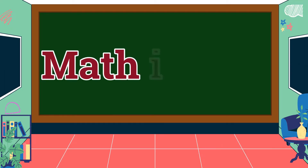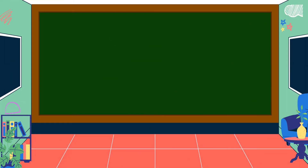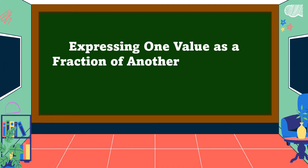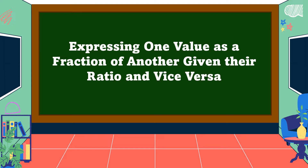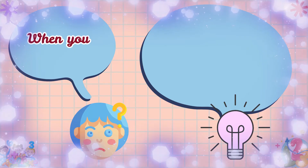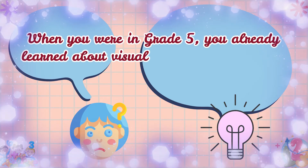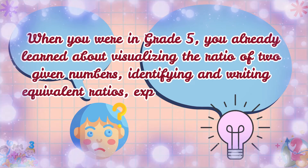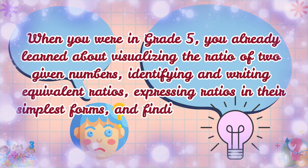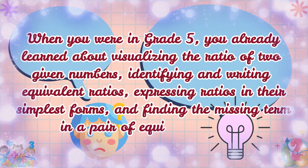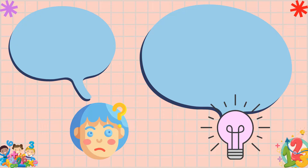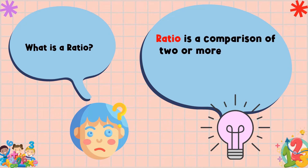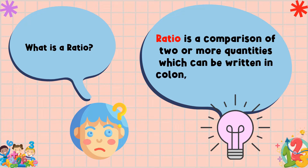Hello everyone, welcome to Math is Fine. Our lesson for today is about expressing one value as a fraction of another given the ratio, and vice versa. When you were in Grade 5, you already learned about visualizing the ratio of two given numbers, identifying and writing equivalent ratios, expressing ratios in their simplest forms, and finding the missing term in a pair of equivalent ratios. As a review, what is a ratio? Ratio is a comparison of two or more quantities, which can be written in colon, words, or fraction form.